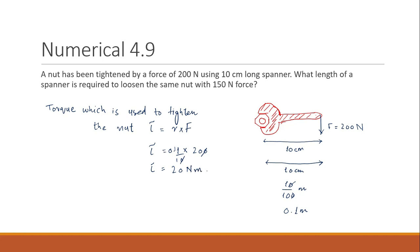If we tighten something with a certain torque, then to loosen that thing we have to provide the same amount of torque. In the second part of this numerical, we want to find the length of spanner required to loosen the same nut with 150 newtons force. Because we are decreasing the force, the length of the spanner must be increased.